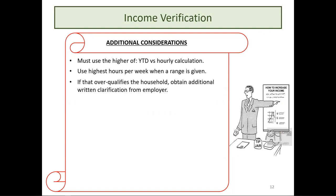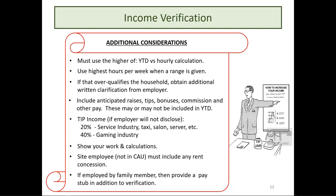You must use the higher of the year-to-date annualized or the forward projection. Use the highest hours per week if a range is given — if the verification says 20 to 25 hours, use 25. If that over-qualifies the household, you need additional written clarification from the employer; verbal clarification alone is not sufficient. Include all anticipated raises, tips, bonuses, commissions, and any other pay, as these may or may not be included in the year-to-date.